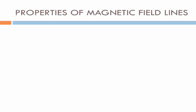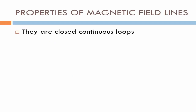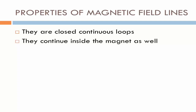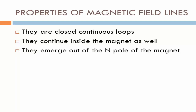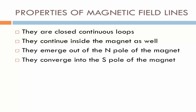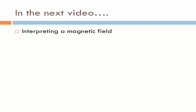To summarize, the characteristics of magnetic field lines are: first, they are closed continuous loops; second, they continue inside the magnet as well; third, they emerge out of the north pole of the magnet and converge into the south pole of the magnet; finally, these magnetic field lines never ever intersect each other. This is the content for this video. In the next video, you will learn how to interpret a magnetic field and how two magnetic fields interact with each other.